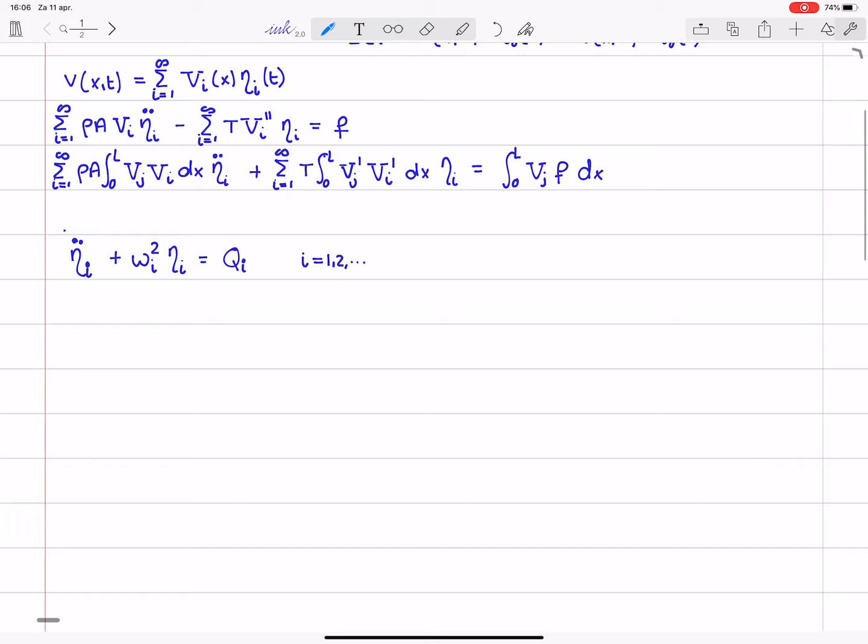So, this is i equals 1, 2, and so on. So, this is actually a very similar form, or exactly the same form of the modal equations that we encountered for discrete systems, where this qi is the modal force, or generalized modal force, and it equals the integral from 0 to L, vi, because i equals j, f dx.